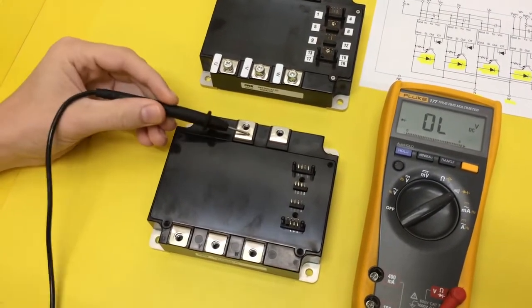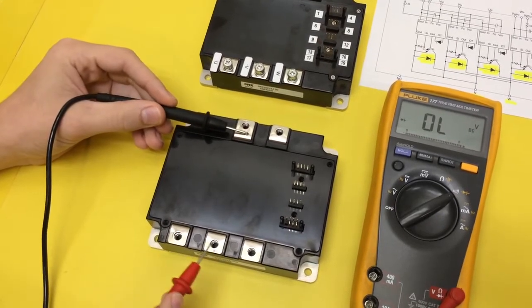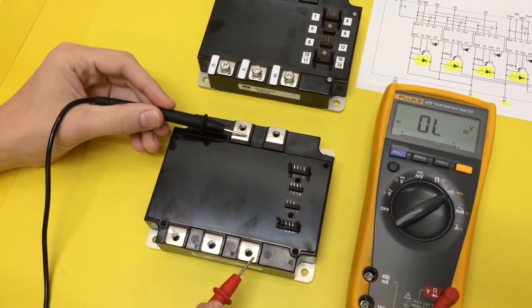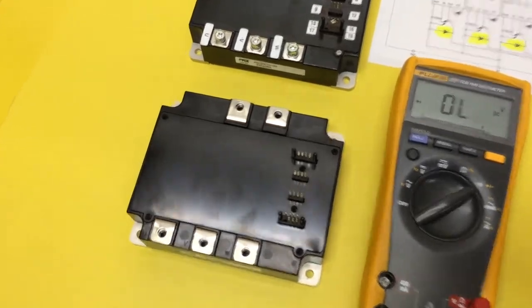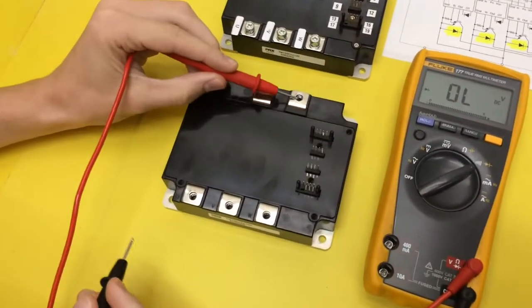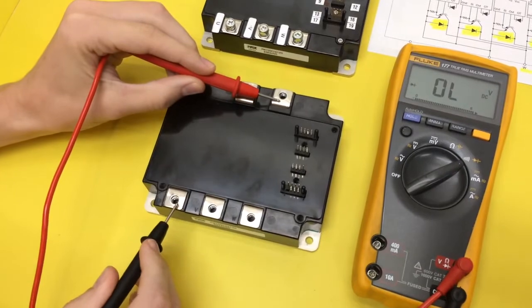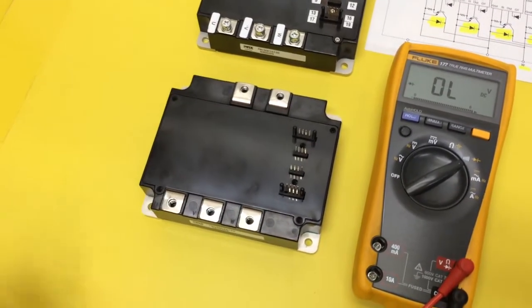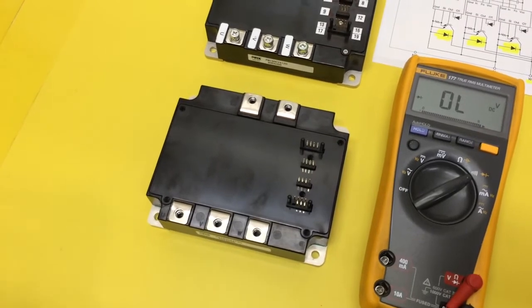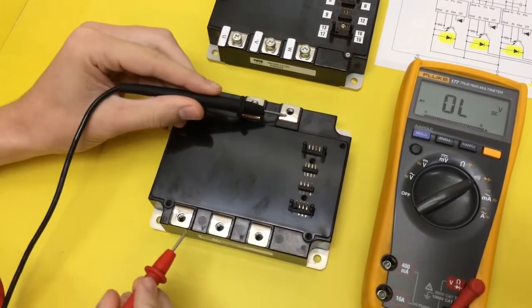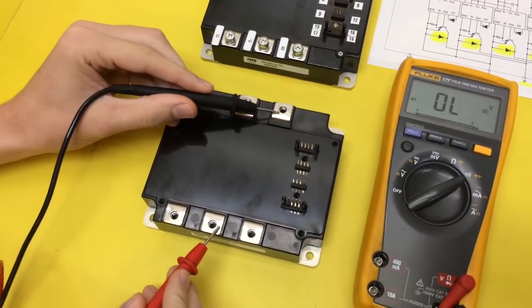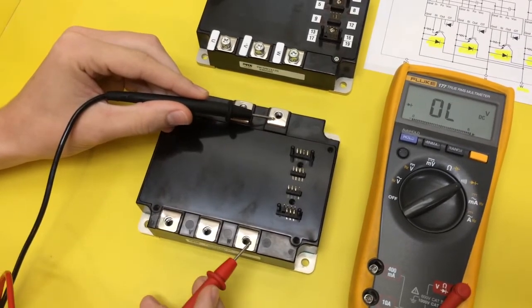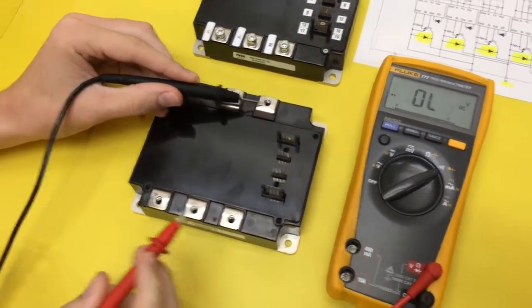He's going to swap his meter leads and do the same thing. We should read OL. Okay, now he's going to go to P positive. The way you know it should read OL is if two out of three or all three do. Now he's going to swap his meter leads again and he should read the diode drop, and he does. So nothing read unusual there.